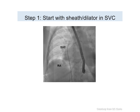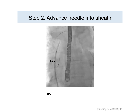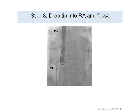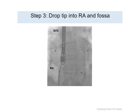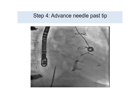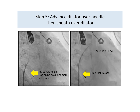Step 1 starts with access of the right common femoral vein; over a wire, the transseptal dilator and sheath are advanced into the superior vena cava. In Step 2, the transseptal needle is advanced into the transseptal dilator without exiting through the tip. The dilator tip is then withdrawn inferiorly into the right atrium, where a noticeable drop into the fossa ovalis can be seen on fluoroscopy. In Step 4, the transseptal needle is advanced through the dilator tip, puncturing the septum and giving access to the left atrium. In Step 5, once the needle is in the left atrium, the dilator is advanced over the needle and subsequently the sheath is advanced over the dilator.